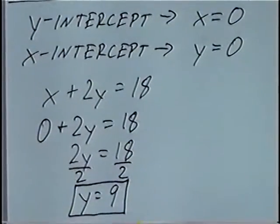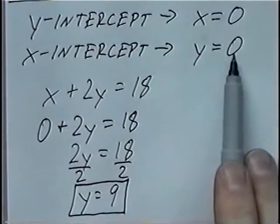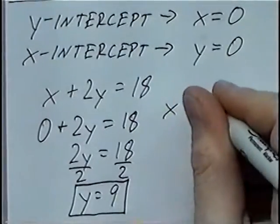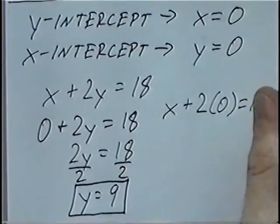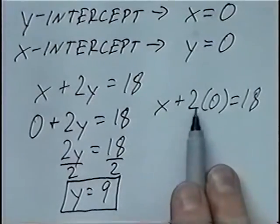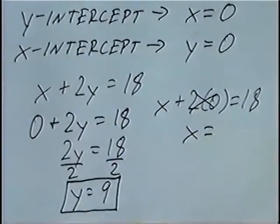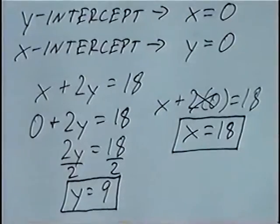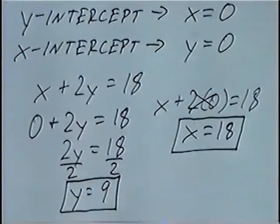For the second part of the problem, we'll find the X intercept. Going back to the original equation, but this time we'll put a 0 for the Y value. So we'll have X plus 2 times 0 equals 18. Solving, 2 times 0 would be 0, and X plus 0 would be X. So X equals 18. The two intercepts: the Y intercept is 9, and the X intercept is 18.